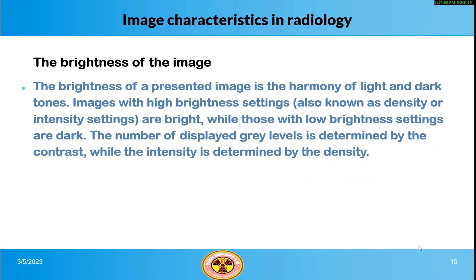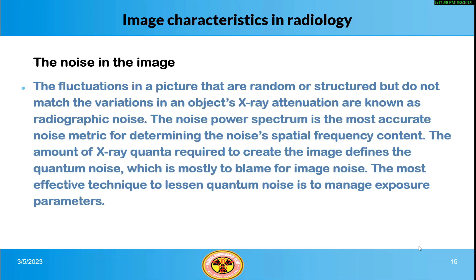The brightness of a presented image is the harmony of light and dark tones. Images with high brightness settings, also known as density or intensity settings, are bright, while those with low brightness settings are dark. The number of displayed gray levels is determined by the contrast, while the intensity is determined by the density. The fluctuations in a picture that are random or structured but do not match the variations in an object's x-ray attenuation are known as radiographic noise. The amount of x-ray quanta required to create the image defines the quantum noise, which is mostly to blame for image noise.